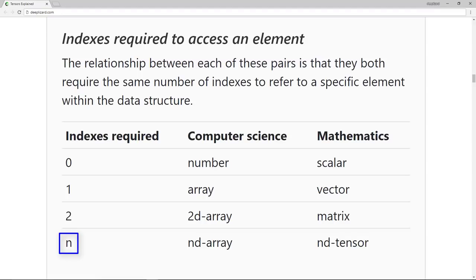The reason we say a tensor is a generalization is because we use the word tensor for all values of n. For example, a scalar is a zero dimensional tensor, a vector is a one dimensional tensor, a matrix is a two dimensional tensor, and an nd array is an n dimensional tensor.